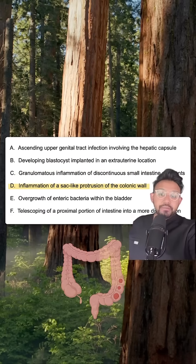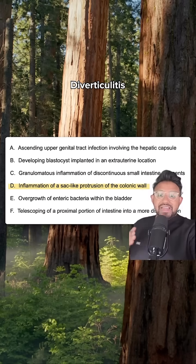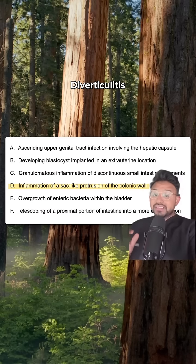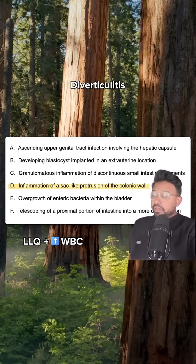Answer choice D: inflammation of sac-like protrusion of the colonic wall. This is going to be very characteristic of diverticulitis. Remember: diverticulitis — elderly patient with constipation, left lower quadrant pain, plus leukocytosis.